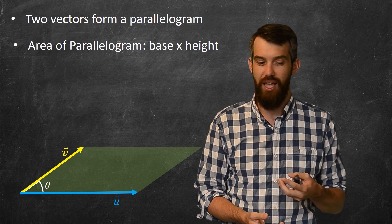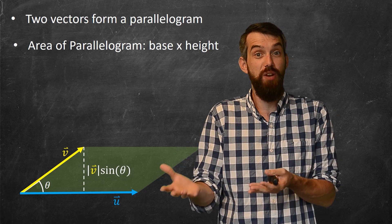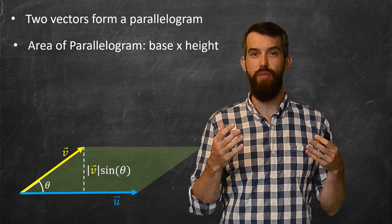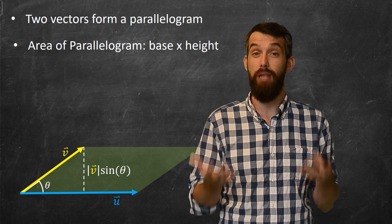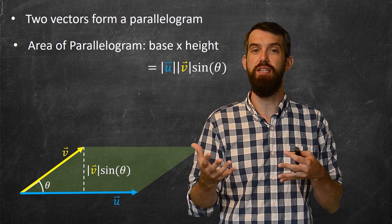What's the height of this thing? I have this value theta, so I know what the height is going to be the length of v sine theta, with a little bit of trigonometry on that triangle. So then what is the area of the parallelogram? It's the base times height, so the length of u is the base, multiplied by this height, so the length of v sine theta.